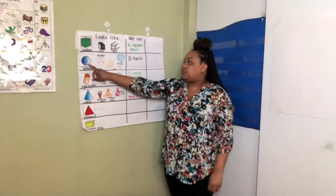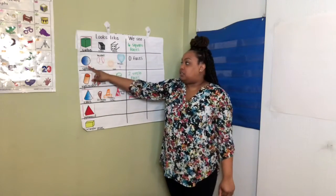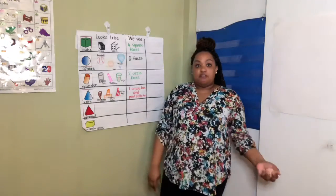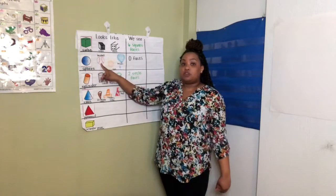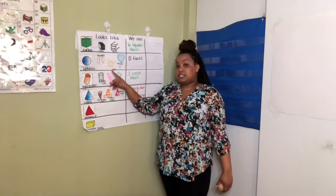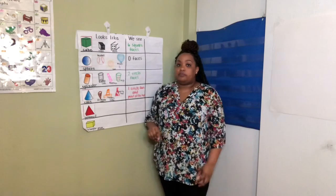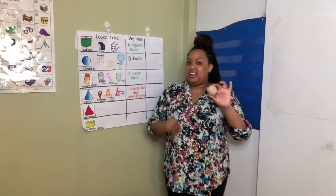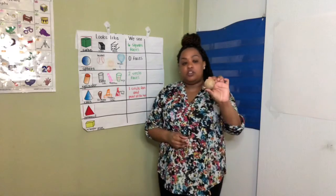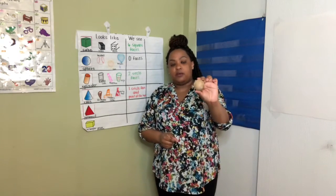A sphere is another 3D shape. In our everyday world, balls look like a sphere, a sun, and a balloon. A sphere has no faces or no edges. It is round.